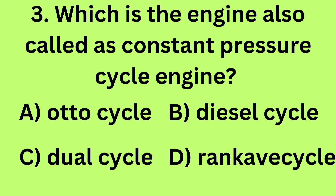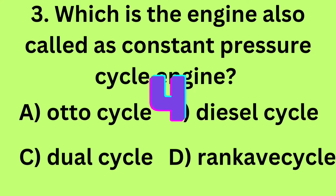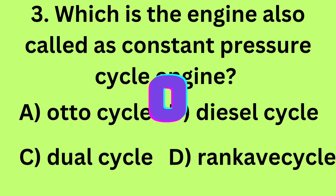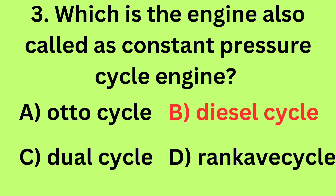Question 3: Which is the engine also called as constant pressure cycle engine? A. Auto cycle, B. Diesel cycle, C. Dual cycle, D. Runco cycle. Answer: B. Diesel cycle.